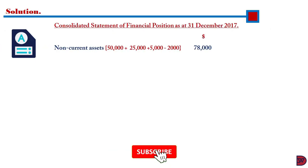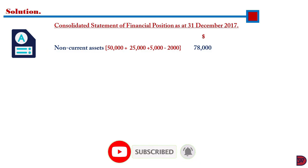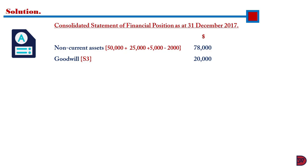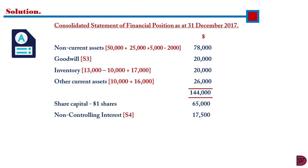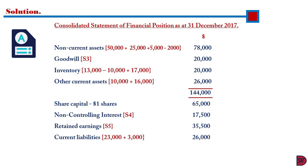For non-current assets: $50,000 for KESA, $25,000 for Zira, plus the fair value adjustment of $5,000, less the unrealized profits — giving a figure of $78,000. Goodwill from step 3 is $20,000. Inventory: $13,000 for KESA, less unrealized profit, plus $17,000 for Zira — giving $20,000. Other current assets: $10,000 for KESA, $16,000 for Zira — $26,000. Total assets: $144,000. Share capital is that of KESA (the parent). Non-controlling interest from step 4 is $17,500. Retained earnings from step 5 is $35,500. Current liabilities total $26,000. Total equity and liabilities: $144,000.